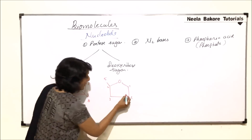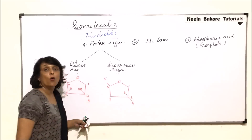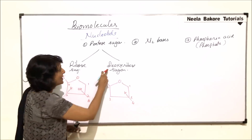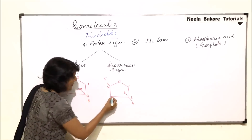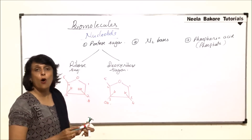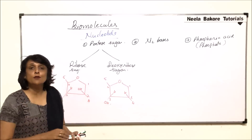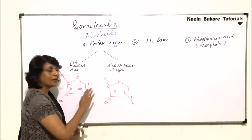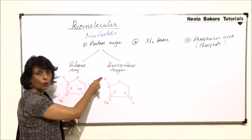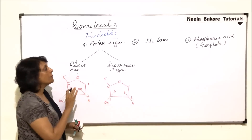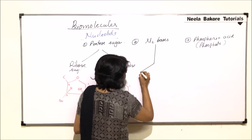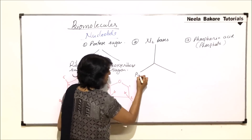In the case of deoxyribose, the ring is the same — made up of one oxygen and four carbons: one, two, three, four, with the fifth carbon in the form of an arm. At carbon number two, OH is replaced by H, meaning there is one oxygen less, and that is what is called 'deoxy.' At the third carbon there is a hydroxyl group. This is the difference between the two.